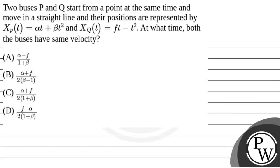Let us read the question. The question given is that two buses P and Q start from a point at the same time and move in a straight line. Their positions are represented by xP = αt + βt² and xQ = ft - t².